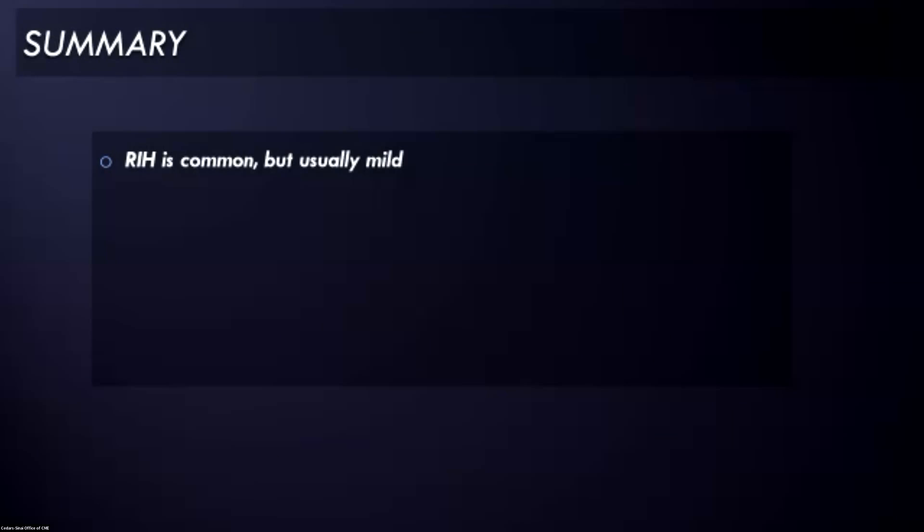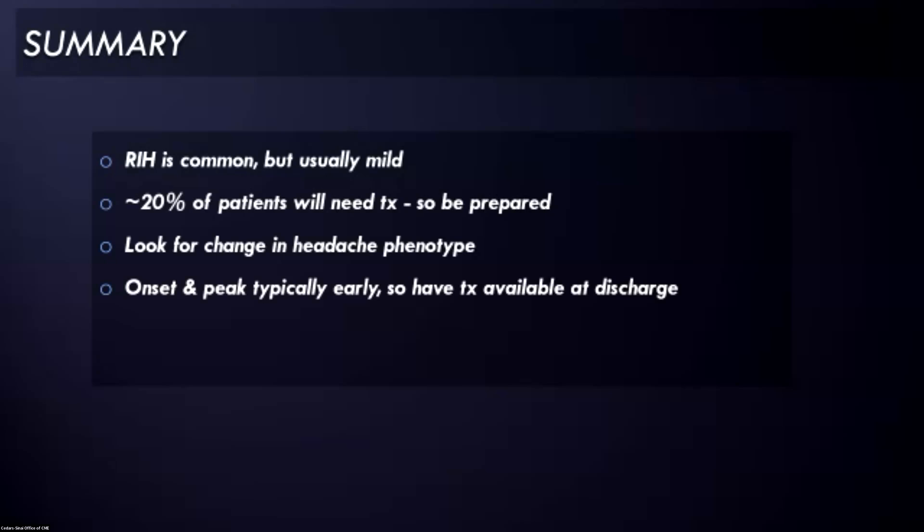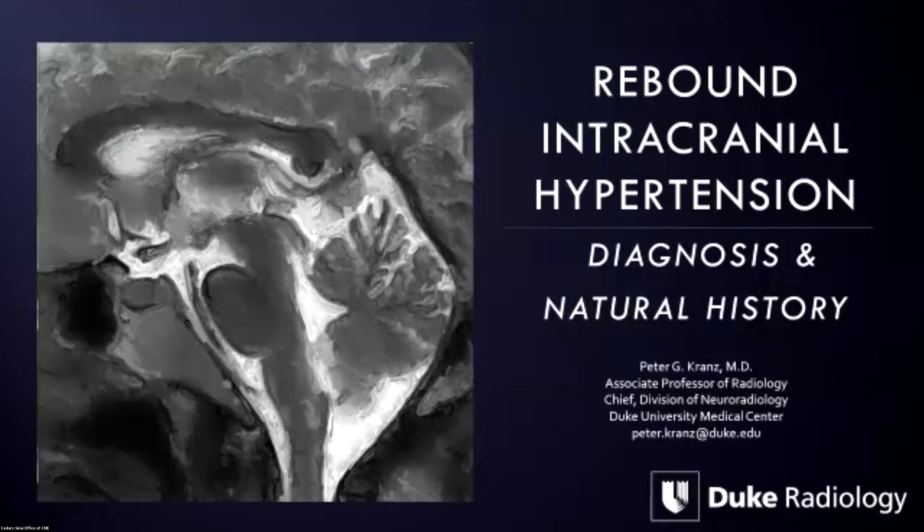So, in summary, I would just say, regarding the natural history and the diagnosis, that rebound is common, but usually mild. About 20% of patients will need to be treated, so you need to be prepared to treat those patients, and you need to counsel patients to be on the lookout for those symptoms so they're not surprised by them and they know what to expect. Look for a change in the headache phenotype, which occurs in the majority of patients. The onset and peak typically happens very early, so you want to have a treatment available at discharge. And it can happen after any type of epidural blood patch, regardless of diagnosis, so it's not particularly helpful from a diagnostic standpoint, and you should not assume that if you're doing an epidural blood patch for postural puncture headache or something else like that, that you will not have to deal with this problem because you will see it.